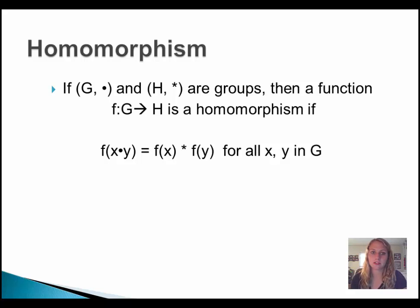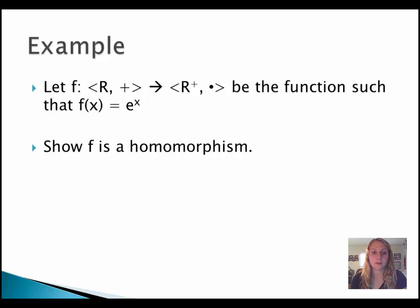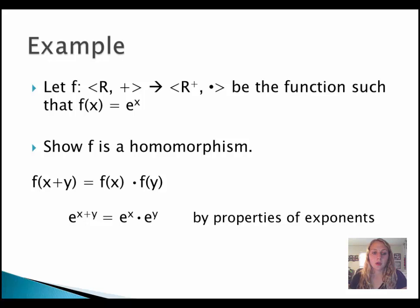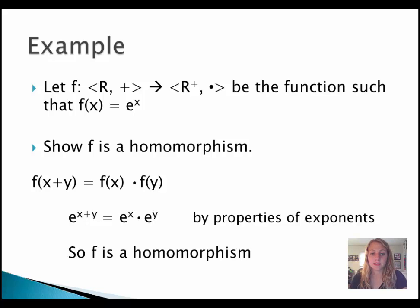Let's go through an example. Our first example has the function from the real numbers under addition to the positive real numbers under multiplication, defined as f(x) = e^x. Our goal is to show f is a homomorphism by verifying f(x + y) = f(x) · f(y). Plugging in, we get e^(x+y) on the left and e^x · e^y on the right. By properties of exponents, these are equal, so f is a homomorphism.